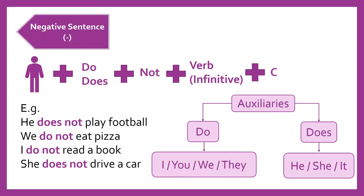For example, he does not play football — él no juega fútbol. As you can see, we didn't add an S to the verb play because this is a negative sentence, and we only add an S to the verb in the positive sentence. Aquí no agregamos una S en el verbo play, aunque el pronombre sea he, porque la S se le agrega al verbo solamente en la oración positiva. Next, we do not eat pizza — nosotros no comemos pizza. In this case we use the auxiliary do because we have the pronoun we.